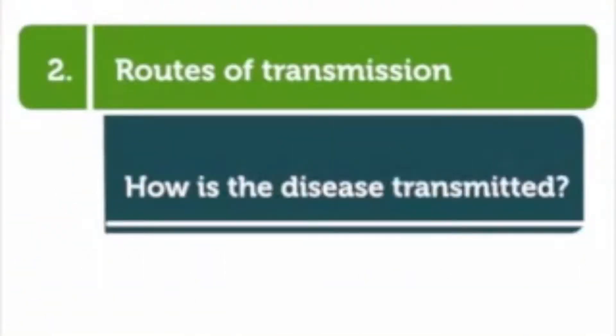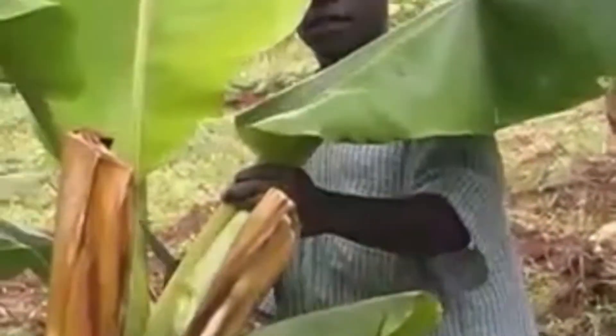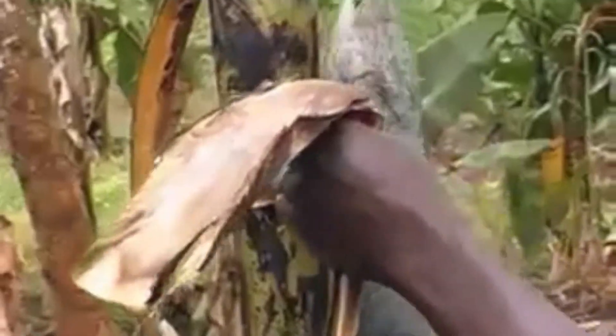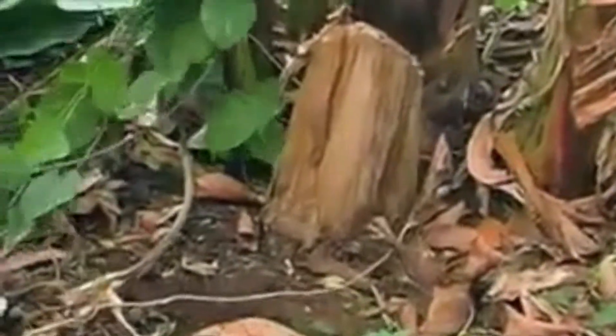The main routes of transmission are tools, agents like insects among others, and planting materials. The disease is mainly transmitted by man through tools like knives, machetes, and hoes, picking up bacteria while cutting plants during routine farm activities like detrashing, desuckering, and cutting leaves for home use. When the same tools are used on healthy plants, those plants become infected.